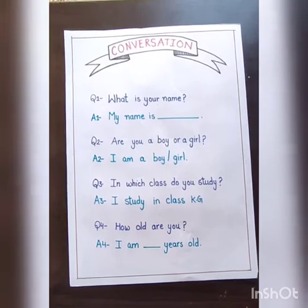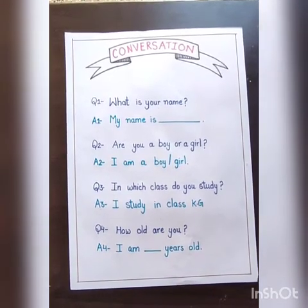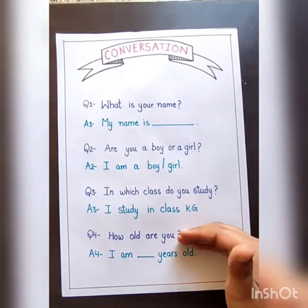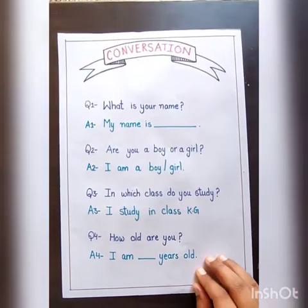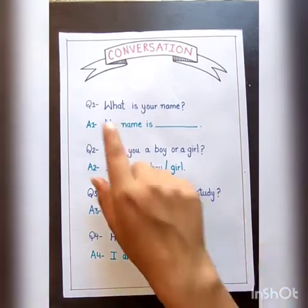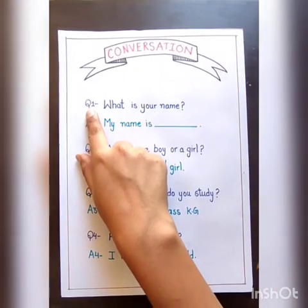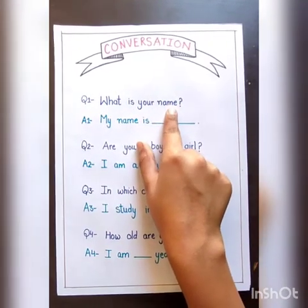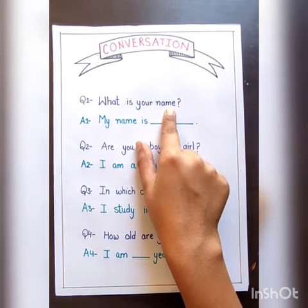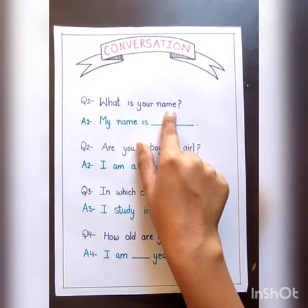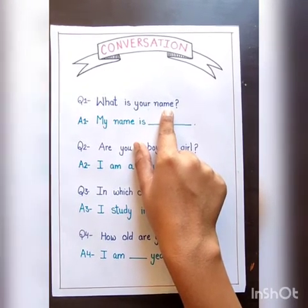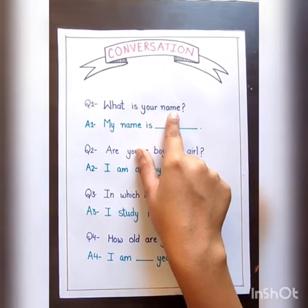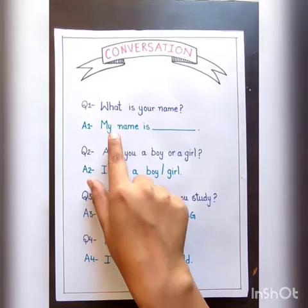Now it's conversation time, so let's start the revision. Here you can see the list of four questions we will study them one by one. Let's start with question number one. Question number one is: What is your name?